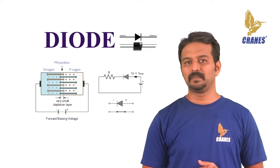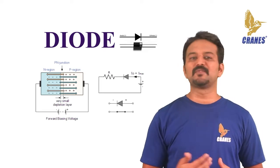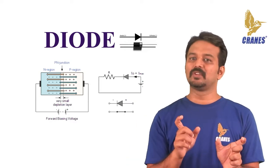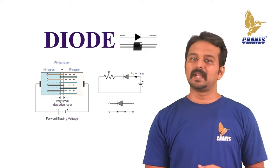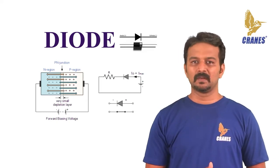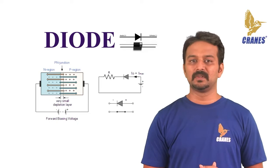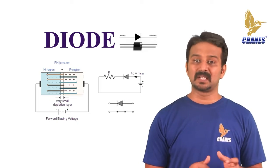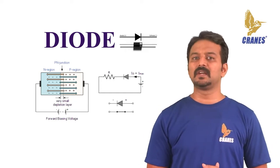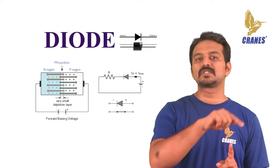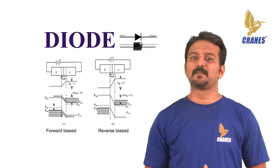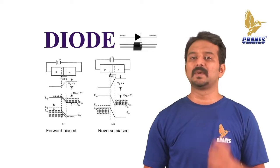Now let us see what happens in a forward biased diode. If we connect the positive terminal of a source to the p-type side and the negative terminal to the n-type side, and increase the voltage slowly from zero — in the beginning there is no current flowing through the diode. Although an external electric field is applied, the majority charge carriers do not get sufficient influence to cross the depletion region, which acts as a potential barrier against them.